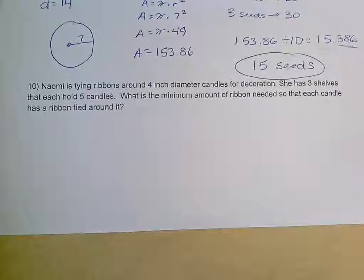Our very last one here. Naomi is tying ribbons around four-inch diameter candles for decoration. She has three shelves that each hold five candles. What is the minimum amount of ribbon she needs so that each candle has a ribbon tied around it?